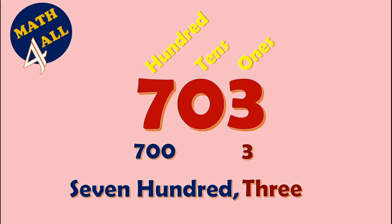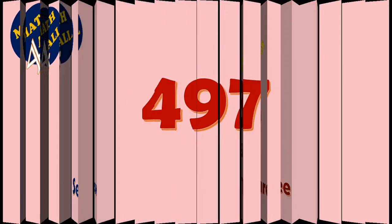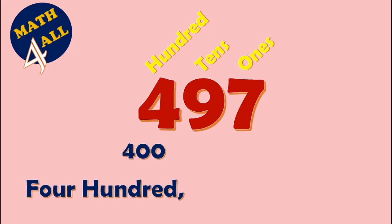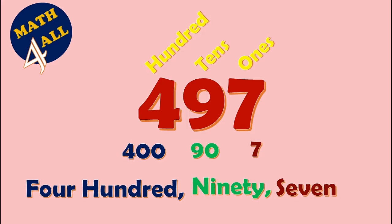Okay, excellent! The last example — here we go. Let's identify the place value and the value of each digit and read it. Four in the hundreds place is 400, nine in the tens place means 90, and seven in the ones place means just seven. Let's read it: 497. And this was our lesson — thank you!